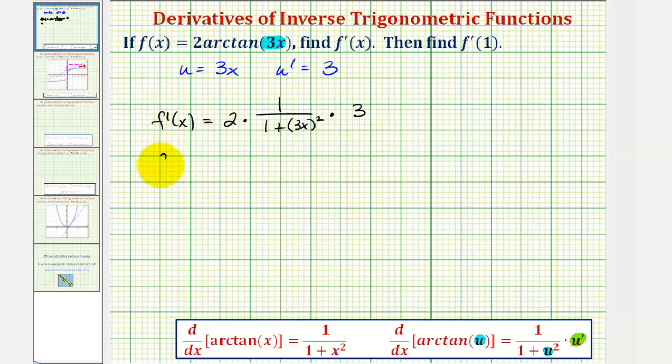And therefore, the derivative function f prime of x would be equal to, notice how the numerator would be two times three, or six, and we have divided by the quantity one plus nine x squared. So this is the first part of the question. This is our derivative function.